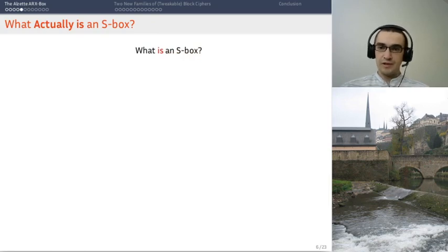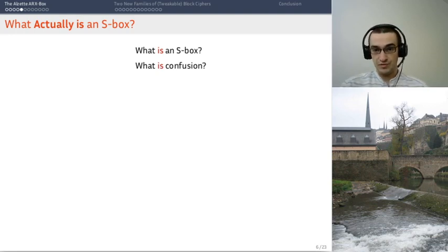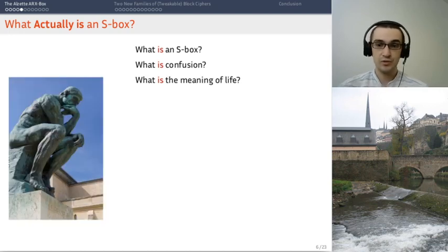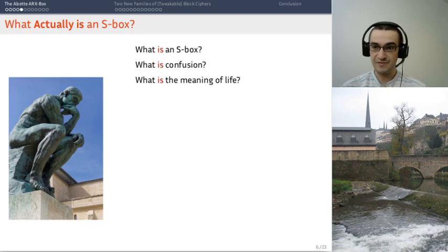To answer this question, we need to answer an obvious question which is what actually is an s-box. Because we tend to think of them as small permutations that are implemented using their lookup tables. But now that we are defining s-boxes using Boolean functions, it's not really a good description in my opinion. And since the s-box is supposed to provide confusion, we need then to answer the very deep question of what is confusion in a cipher. And that will quickly lead us to very deep philosophical questions to which I won't even pretend having the answer to.